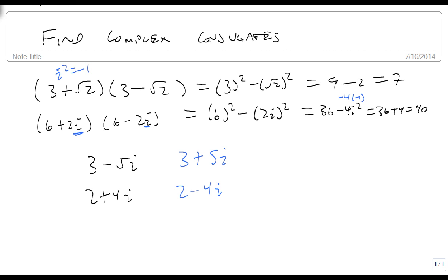If I have minus 3 plus 7i, then my complex conjugate is minus 3 minus 7i. And if my complex number is 3i, my complex conjugate is minus 3i. Always change the sign on the i.